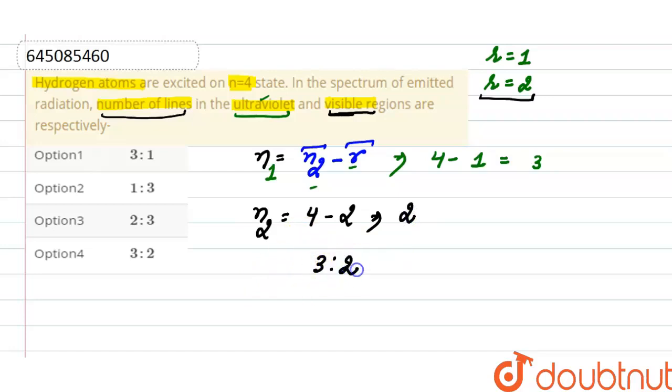are in the ratio of 3:2, and the correct option here is option 4.